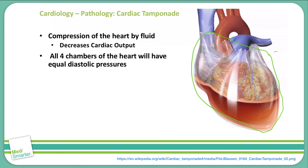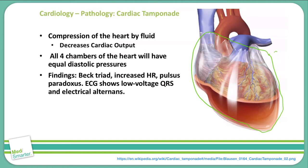A characteristic of cardiac tamponade is that all four chambers of the heart have equal diastolic pressures. Findings include Beck's Triad. Beck's Triad is characterized by hypotension, distended neck veins, and distant heart sounds.